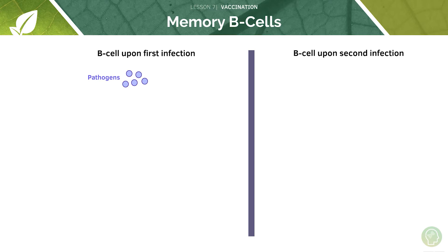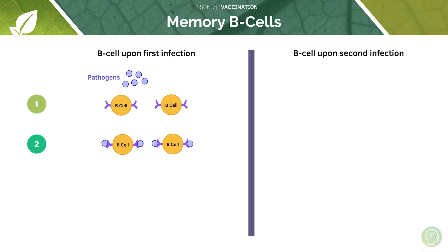Let's recap the mechanism by which a lymphocyte may produce antibodies. The lymphocyte we're referring to here is the B cell, and this is the one you need to focus on when it comes to vaccination. This B cell circulates in the blood, encounters the pathogen, and binds to a specific antigen on the pathogen's surface.